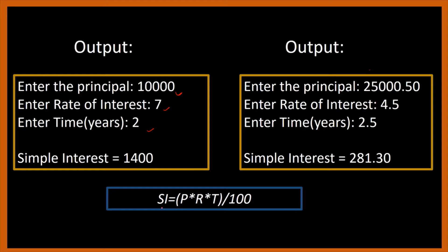The formula to calculate simple interest is P × R × T / 100. In our program we will first take three inputs — principal, rate of interest, and time — then do the calculation using SI = P*R*T/100, and then print the output, that is, the simple interest. Let's see how we will make the program.